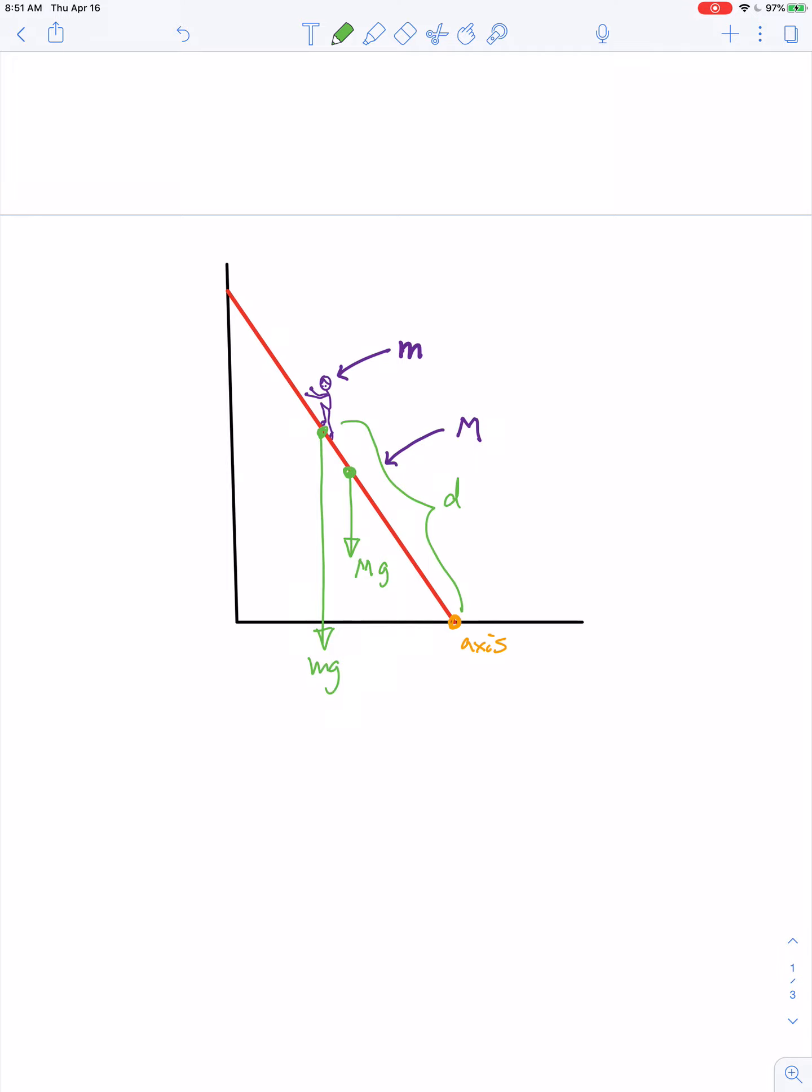Then their force vector points down as well. Notice I drew that vector longer because this person is 90 kg but the ladder is only 10 kg. There's a couple more forces: there's a normal force acting at the wall, an upward normal force acting at the ground, and then there's a force of friction pointing to the left.